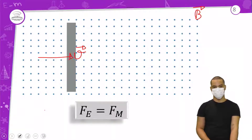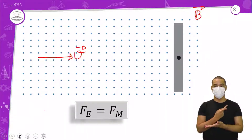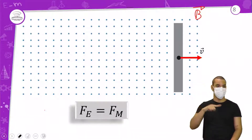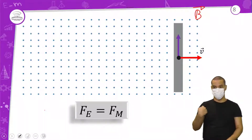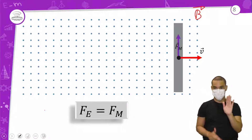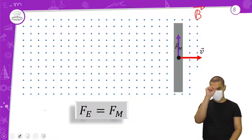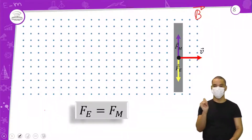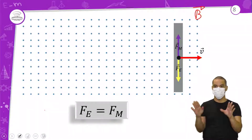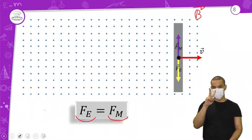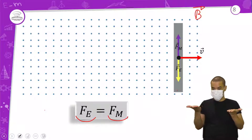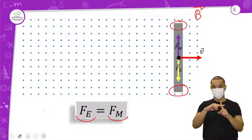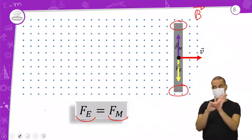A força elétrica vai equilibrar no sentido contrário. A força magnética e a força elétrica são iguais porque, se é equilíbrio, é igual. Vou ter cargas negativas em uma ponta, cargas positivas na outra, e a força magnética equilibrando a força elétrica. Continua se movendo — a velocidade, a direção, a força magnética para cima. Por que para cima? Porque vou estar equilibrando a força elétrica para baixo. E quem são os portadores de carga? Os elétrons.